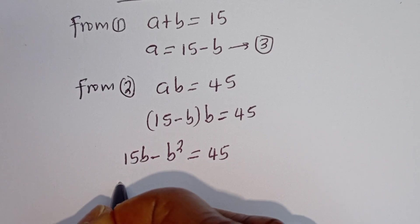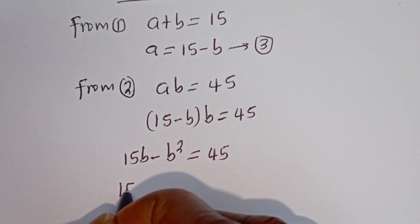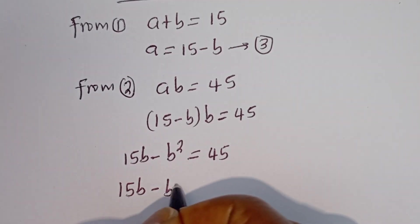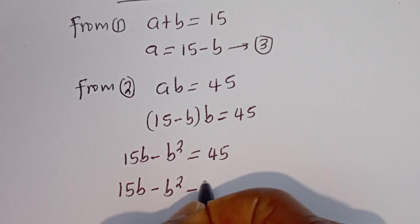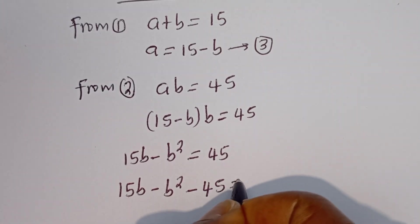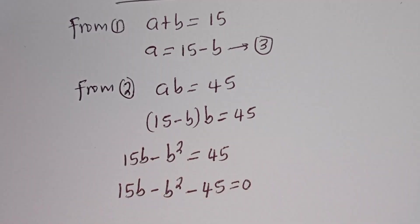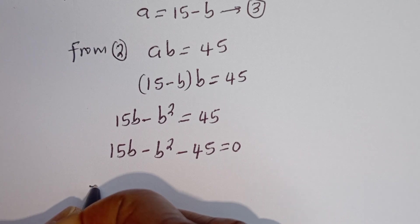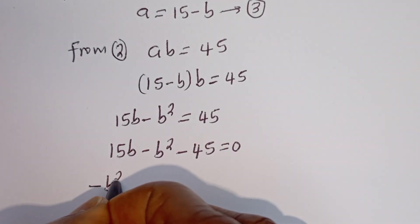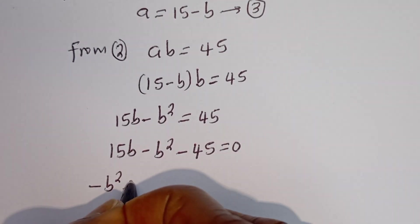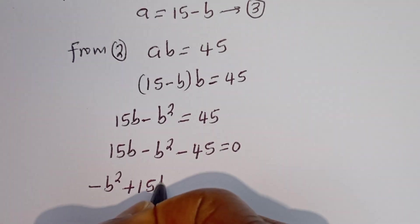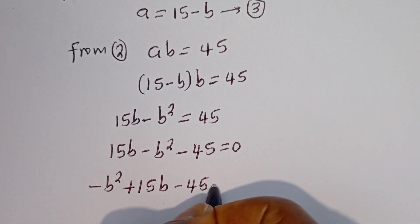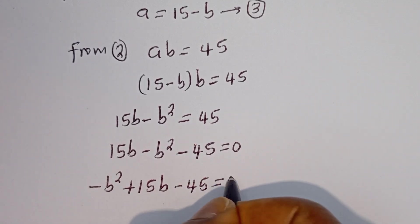Then we have 15B minus B squared minus 45 is equal to 0. Rearranging, we have minus B squared plus 15B minus 45 is equal to 0.